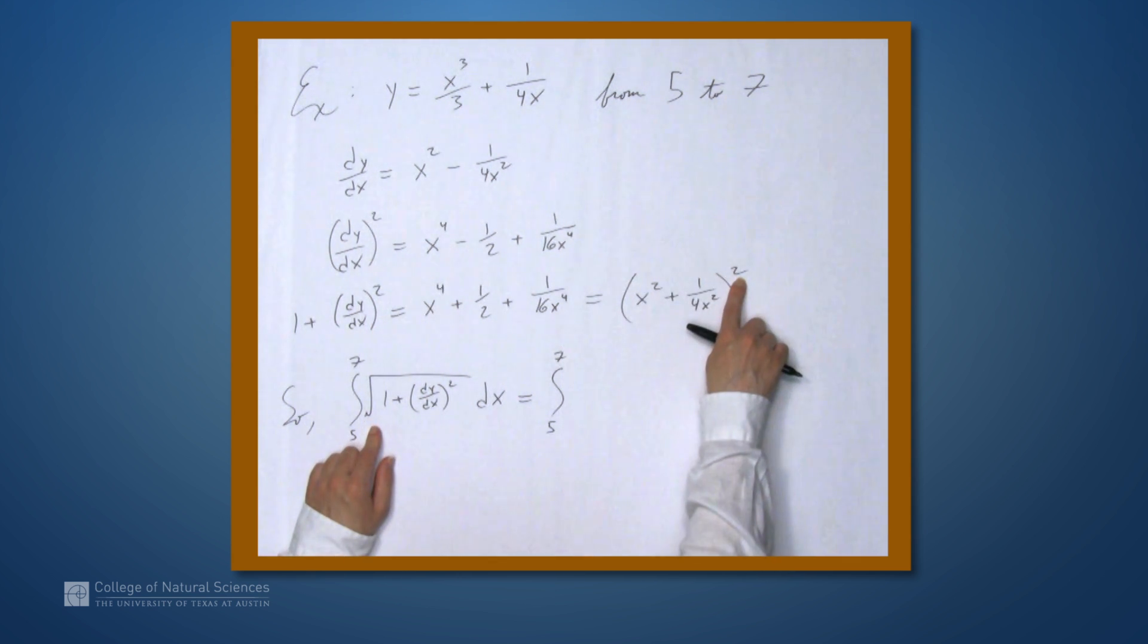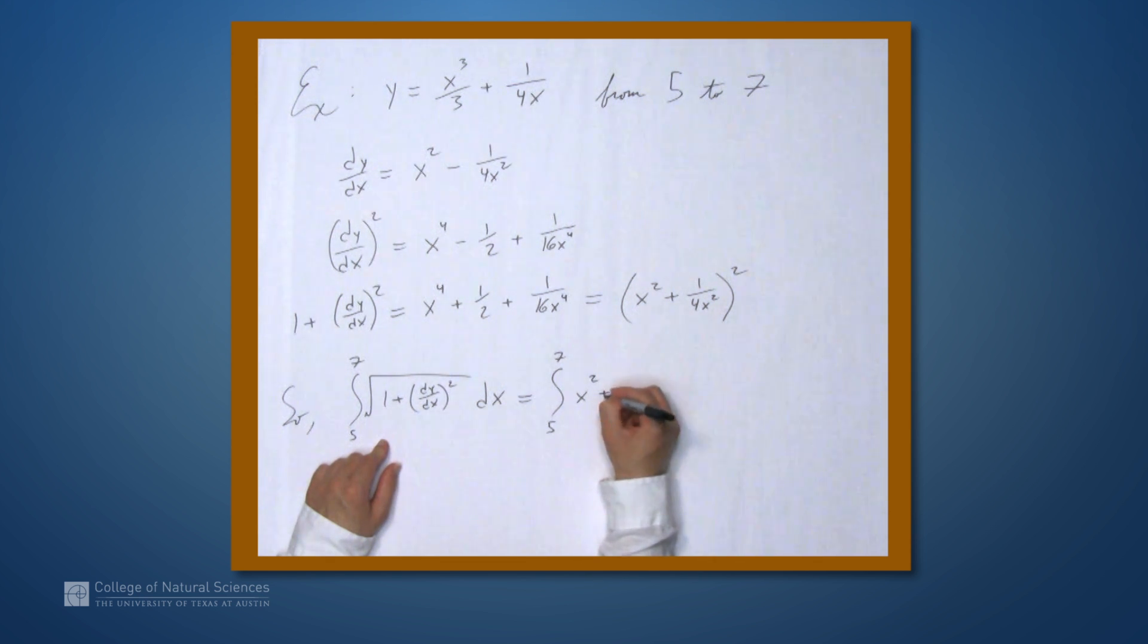Well, taking the square root of this thing squared leaves us with just this term inside. So, we have the integral from 5 to 7 of x squared plus 1 over 4x squared dx.